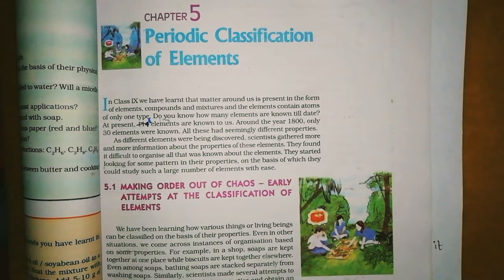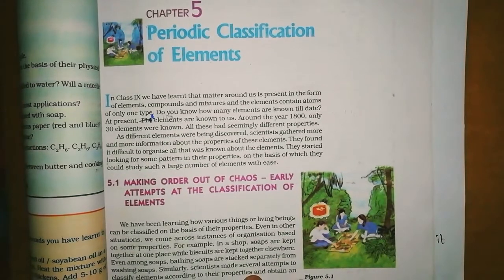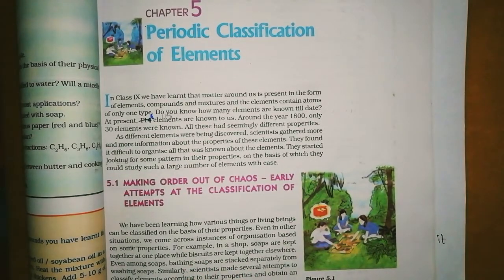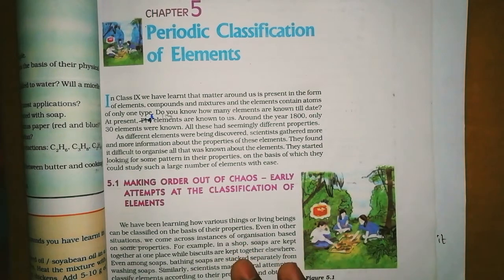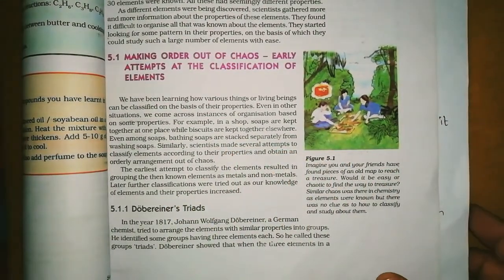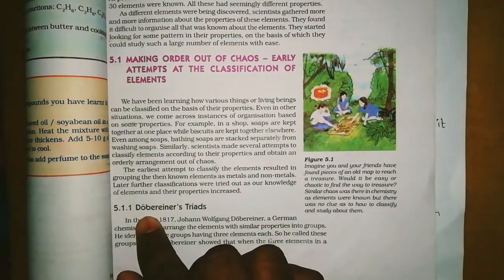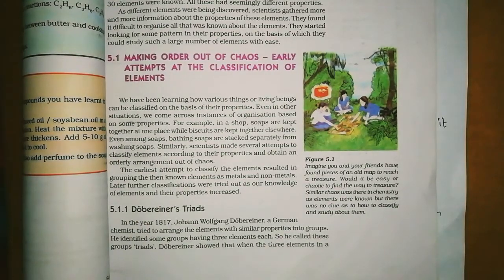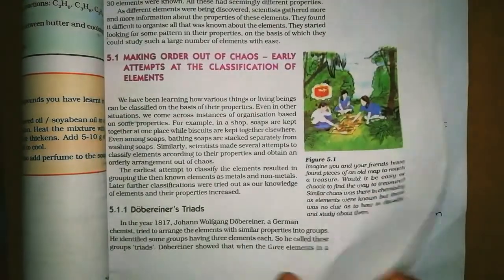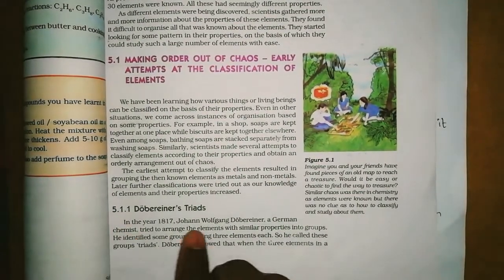We also covered the importance of the periodic table, why it is still used nowadays, and which scientists were involved in classifying or arranging the elements in order. These are the things we learned in the last class, and today we are going to start with the first scientist called Dobereiner.